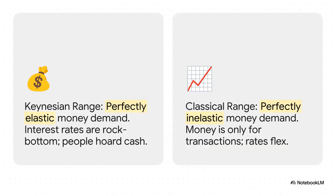This slide perfectly shows the two sides of the coin — two opposite economic worlds. On one side, you've got the Keynesian range. That's our liquidity trap. Money demand is perfectly elastic, a fancy way of saying people will happily hoard every single dollar you give them at that super low interest rate. Then on the other side, you have the classical range — the complete opposite. Money demand is perfectly inelastic, which means people only hold cash to buy stuff, period. And interest rates are super flexible, always moving up and down to keep everything humming along.